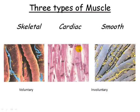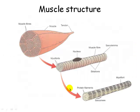Here are the three different types of muscle and you can see quite a difference in their structure. Here's the skeletal muscle that we have voluntary control over. Here's the cardiac — the amazing muscle around your heart. And the smooth involuntary muscle that we have no control over.